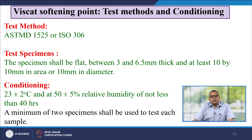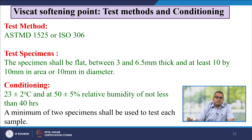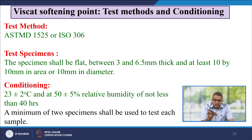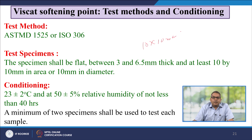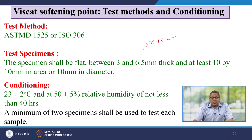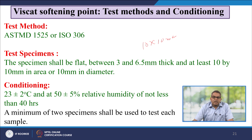The test method is ASTM D1525 or ISO 306. The specimen shall be flat, between 3 and 6.5 mm thick, and at least 10 mm × 10 mm in area or 10 mm in diameter. Conditioning is at 23 ± 2°C with relative humidity of 45 to 55% for not less than 40 hours, and a minimum of 2 specimens shall be used to test each sample.